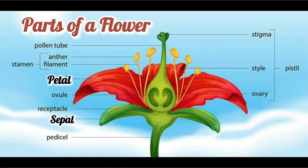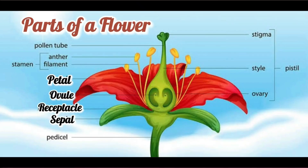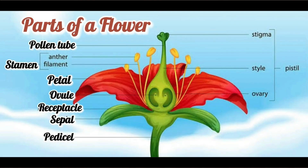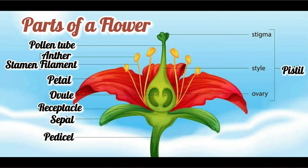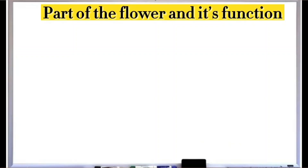The parts of a flower: the petal, the sepal, the receptacle, the ovule, the pedicel, and the pollen tube. The stamen consists of anther and filament. The pistil consists of stigma, style, and ovary.